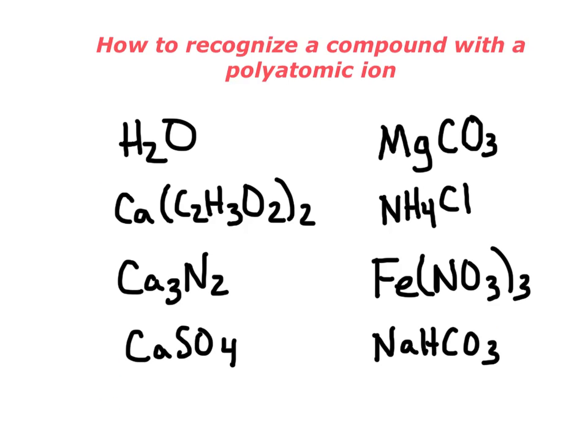So how do you recognize a compound with a polyatomic ion? If a compound name ends in -ate or -ite, it probably has a polyatomic ion. But sometimes you're given the formula and need to figure it out. H2O, for example, is a binary compound — two different elements, a binary molecular compound. A dead giveaway is if you see parentheses — they will be written around a polyatomic ion. This one does contain a polyatomic ion. Ca3N2, on the other hand, is a binary ionic compound and does not contain a polyatomic ion.